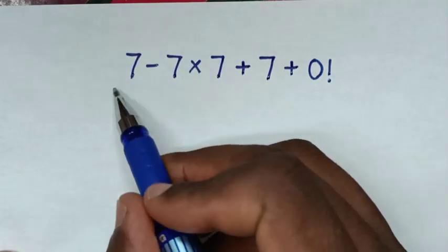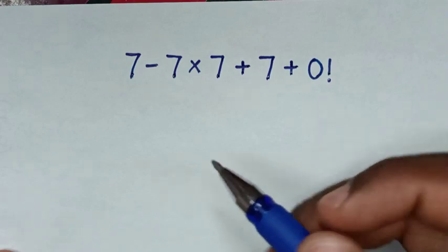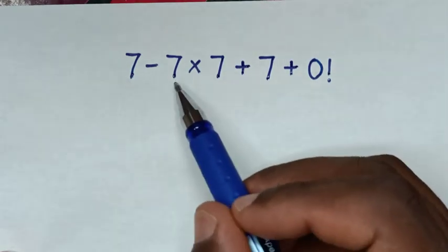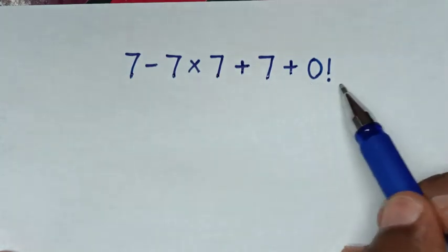Hello! You are welcome to solve this math problem of orders of operation. The problem is 7 minus 7 times 7 plus 7 plus 0 factorial.